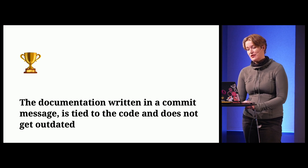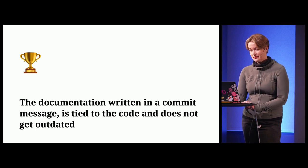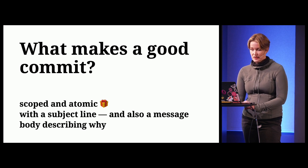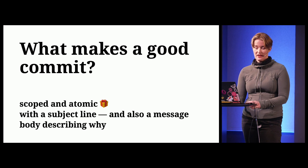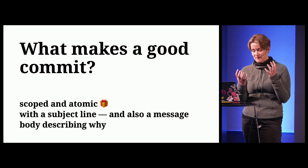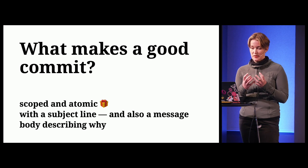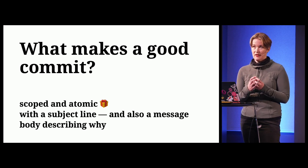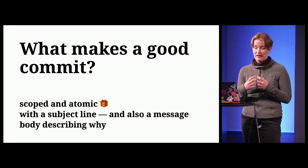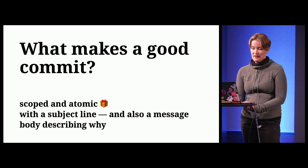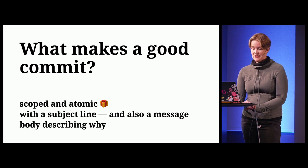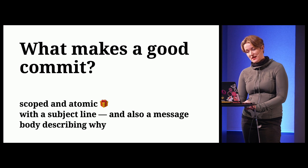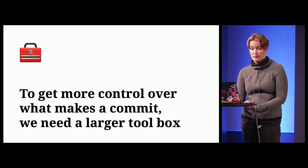If people don't think about Git as documentation, then trying to read Git history becomes a lot less useful. But I think it matters, so I try to make an effort in crafting my commits. What makes a good commit? People often talk about it being scoped and atomic — wrapped up in a diff where the changed lines are together in a commit with intention. It has a subject line and also a message body describing why. But to get more control over what makes a commit, we're going to need a larger toolbox.